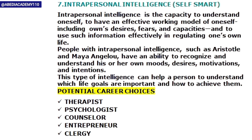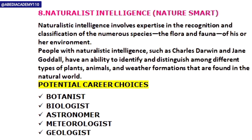Intrapersonal intelligence — self smart. If a person has this type, they know more about themselves: their desires, fears, capacities, strengths, and weaknesses, and they know how to use this information to change their lives. They can recognize and understand their own moods and intentions very clearly. Examples include Aristotle and Maya Angelou. Career options include therapist, psychologist, counselor, entrepreneur, or clergy.